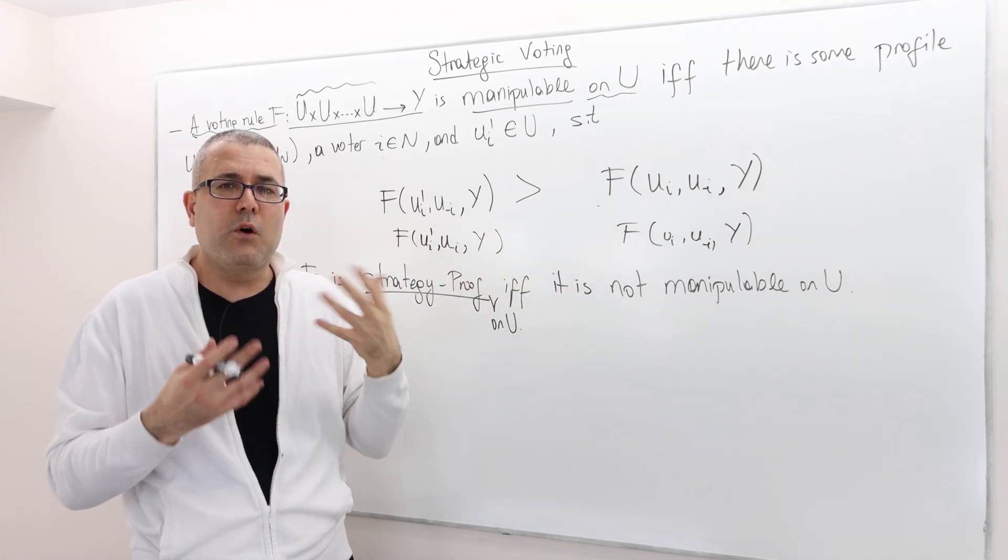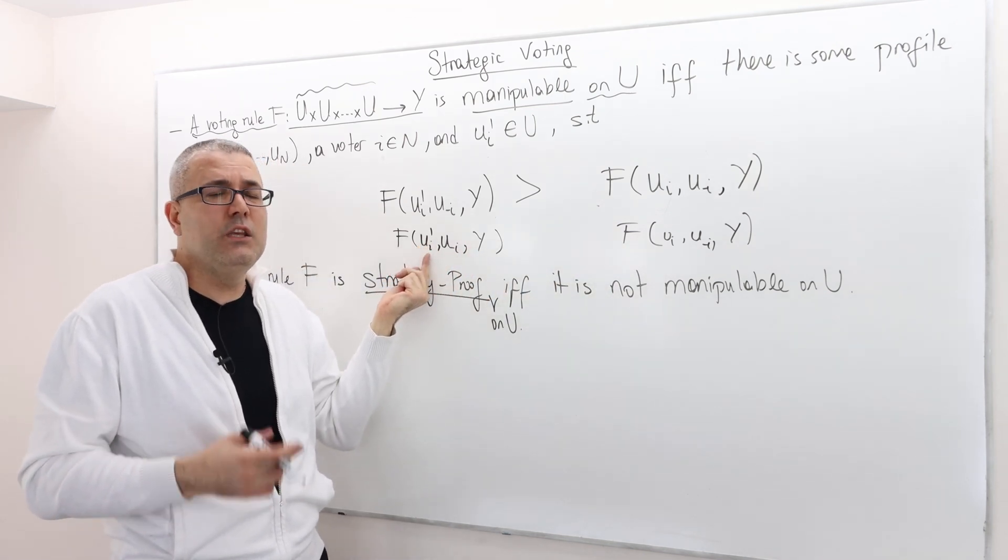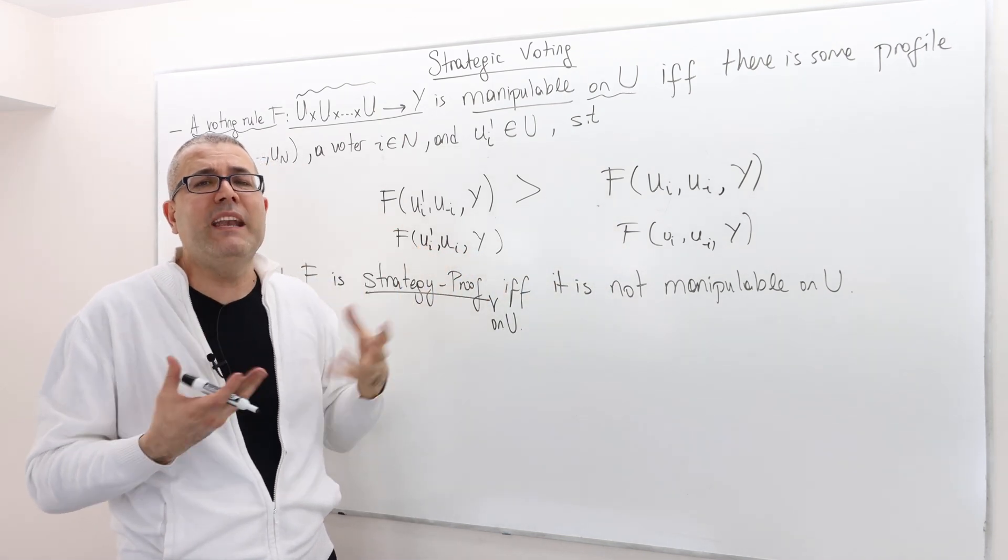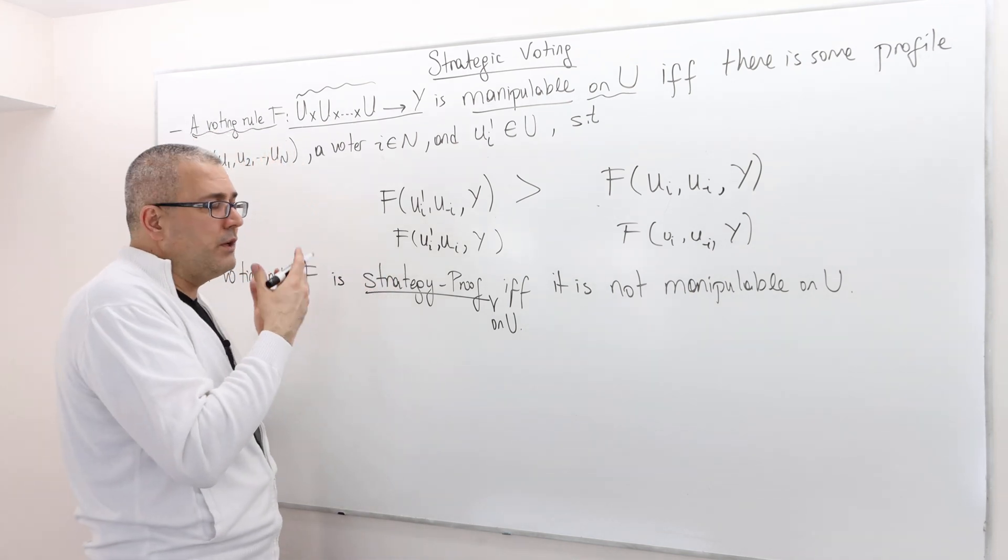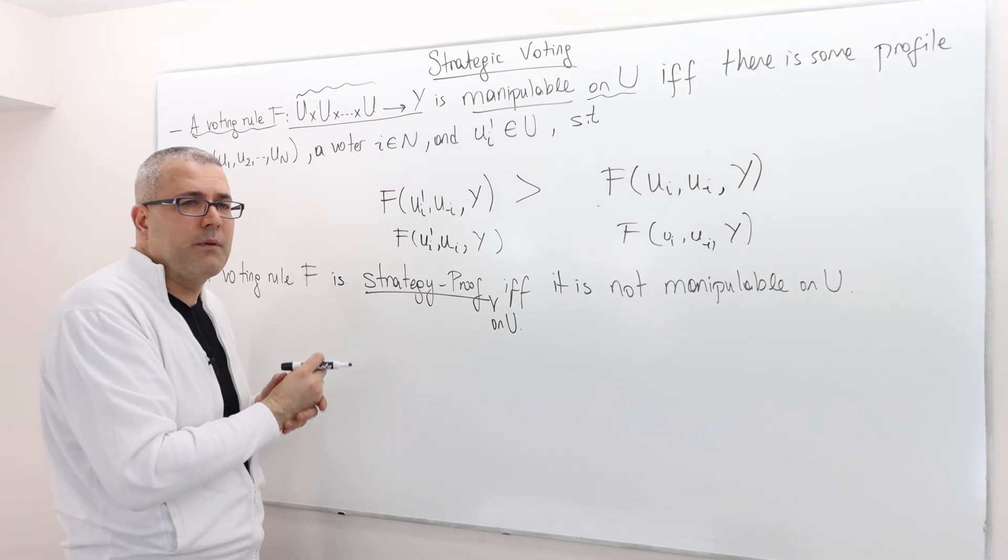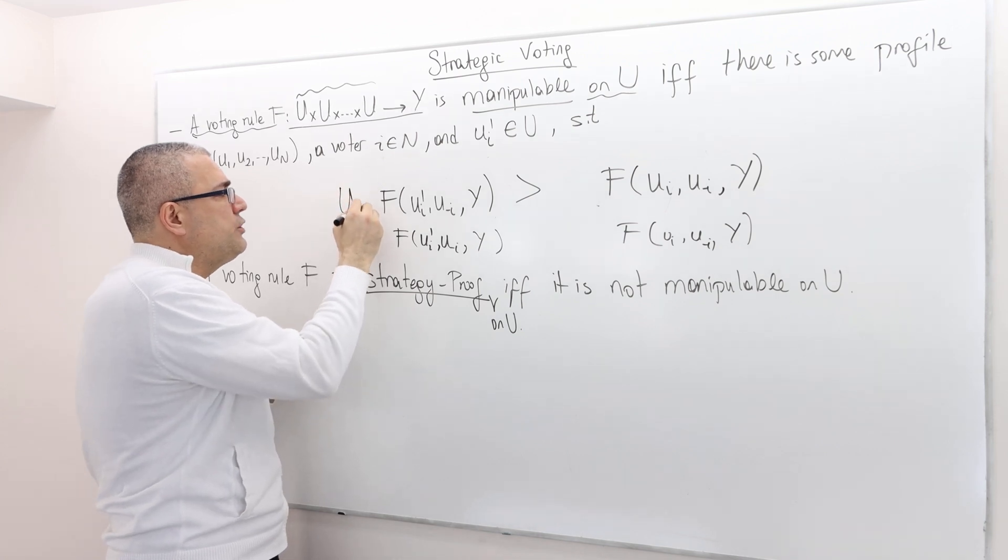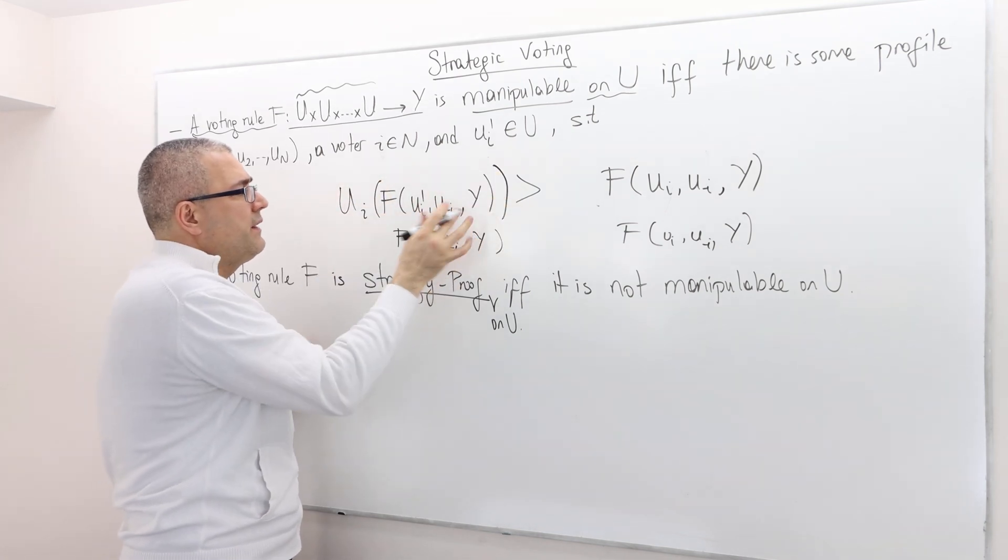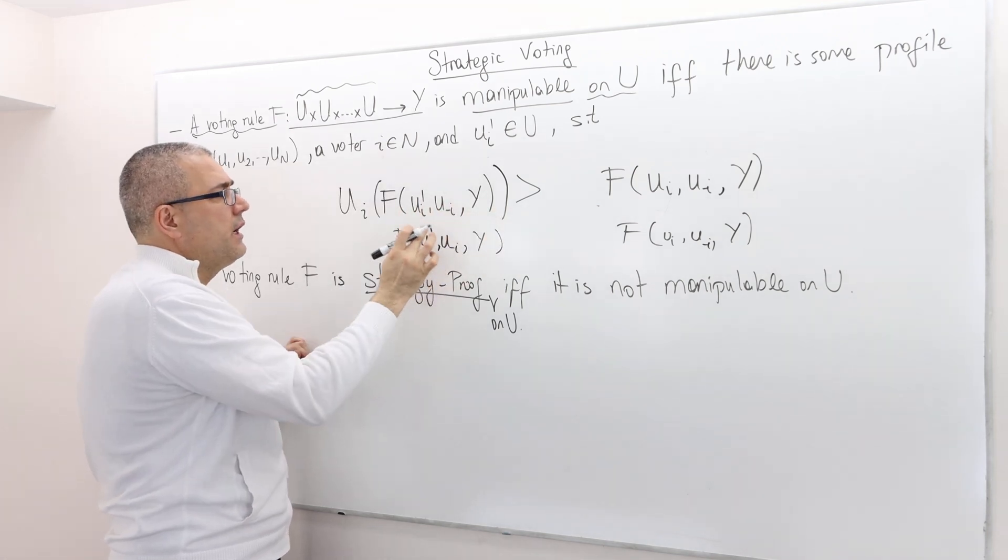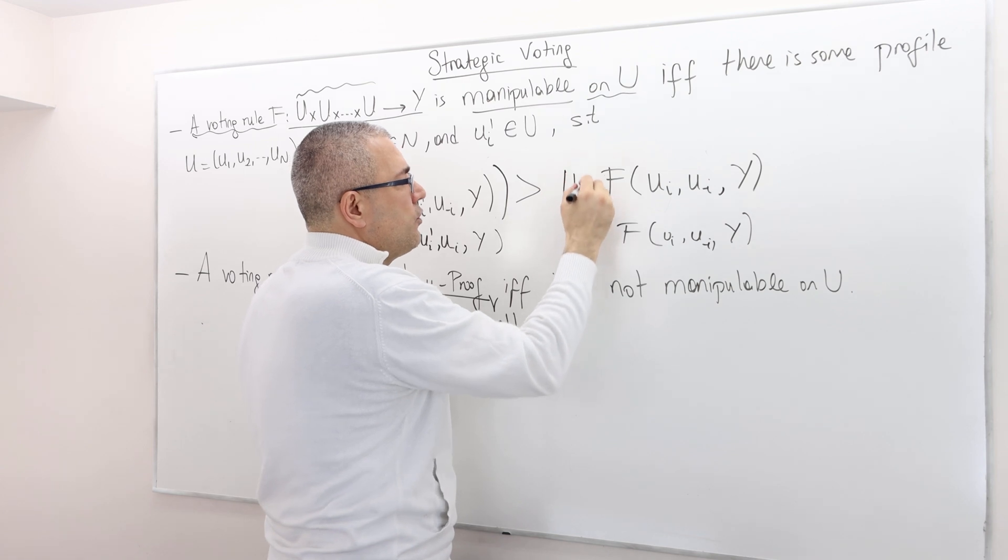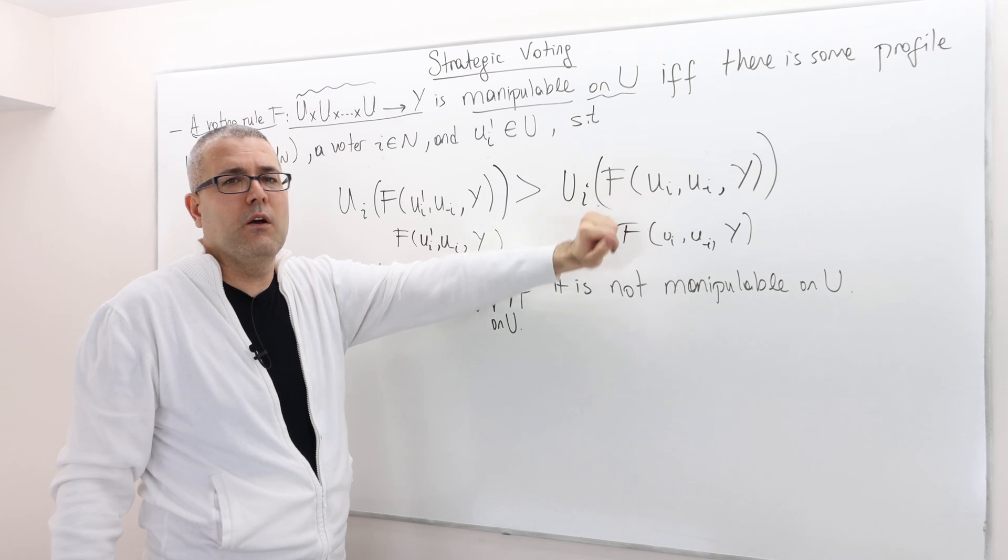So my utility is U I, I'm sorry, the player I's utility or the voter I's utility is U I, but he declares something else U I prime, and he benefits out of this manipulation. So how do I, he benefits out of declaring something else? Well, remember, his utility is U I. So this is an outcome. So whatever this outcome is, his utility is going to be bigger than his utility when he declares his preferences truthfully.